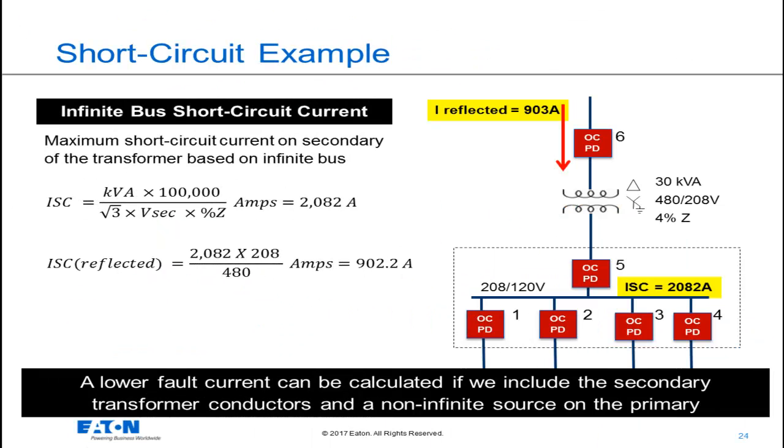Let's do a real-world example. I have a 30 kVA transformer with a 4% impedance. The maximum available short-circuit current that can be found on the secondary is 2082 amps, and it's calculated here on this slide. That current reflected to the primary is what the overcurrent protective device number six will see for a fault on the secondary, and that number is 903 amps. For circuit breaker applications, these are important parameters. Remember, this is based on a 30 kVA transformer with 4% impedance. If you change any of those two parameters, the numbers will be different.